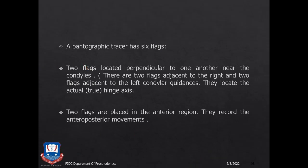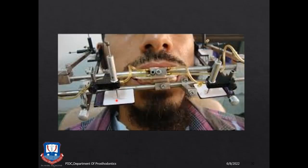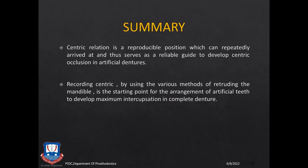A pantograph has six flags: four flags in the horizontal plane and two flags in the sagittal plane. Two flags are in the anterior region with styli that create recordings of mandibular movements and pinpoint centric relationship. Two posterior flags with plungers record posterior movements. Two additional flags on the sides of the patient's face — over the TMJ — copy the movements of the mandible in the sagittal plane.